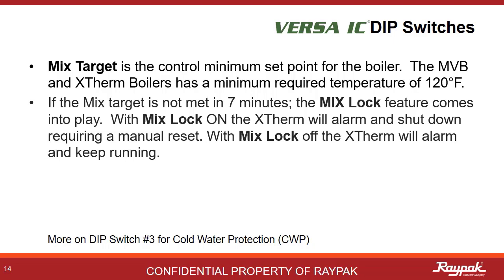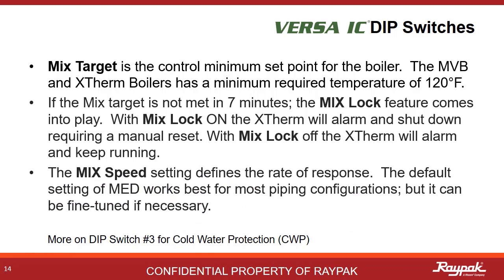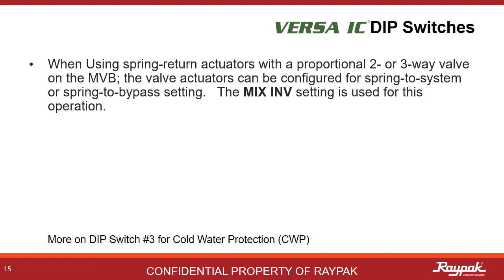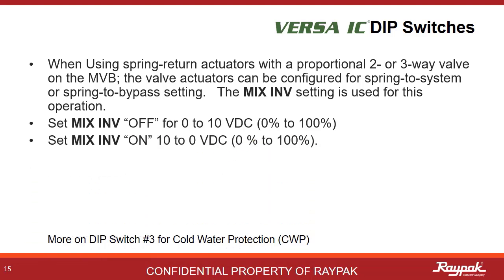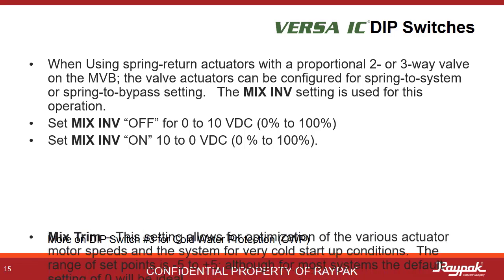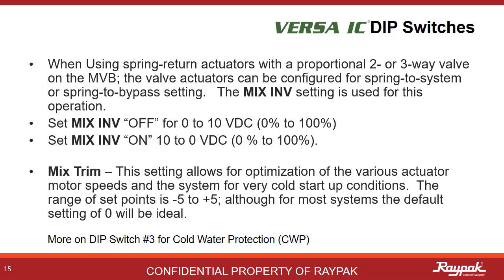The mixed lock setting determines whether the boiler alarms and keeps running or alarms and shuts off. The mixed speed setting is used for defining the rate of response of the cold water protection system — generally, medium is best. Mixed inverse is used to define which way the spring actuator works for the three-way valve used on the cold water protection system. Different manufacturers set them up differently. If the actuator responds with 0 to 100% open with a 0 to 10 volt DC signal, then set the mixed inverse to on. Mixed trim allows for a final fine tuning of the cold water protection system, scaled from minus 5 to plus 5, allowing you to give the system a little nudge one way or the other if necessary.